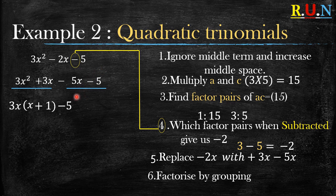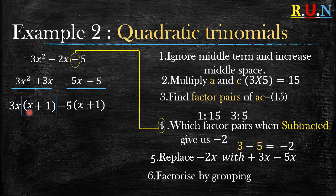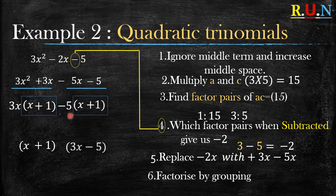Negative 5x divided by negative 5 gives positive x. Negative 5 divided by negative 5 gives positive 1. When you have a negative factor outside, there will also be a negative inside. Check the brackets: x plus 1 and x plus 1 — yes, they are the same, so we're on the right track.